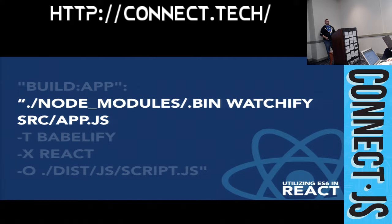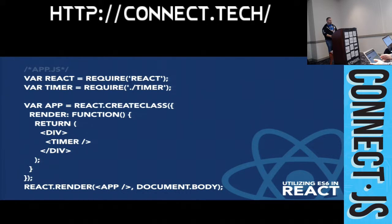Let's talk about simplified syntax and the changes from ES5 to ES6. In ES5, you run a createClass method to create React components — you pass in an object with your methods and render function. At the bottom you render out the app and post it to the document body. In ES6, the requires obviously change — they become imports.